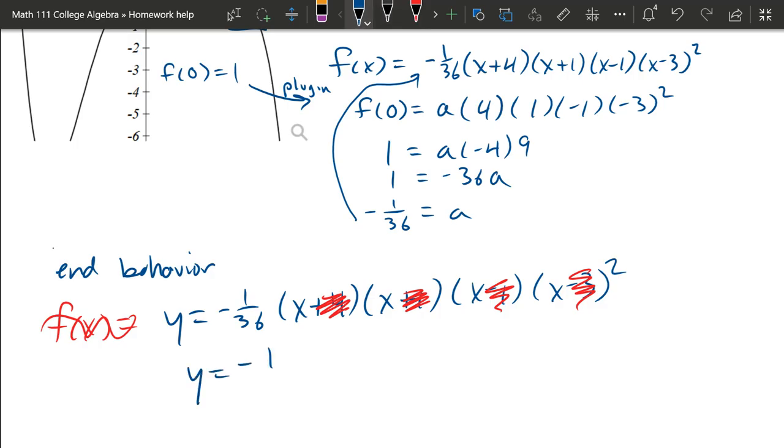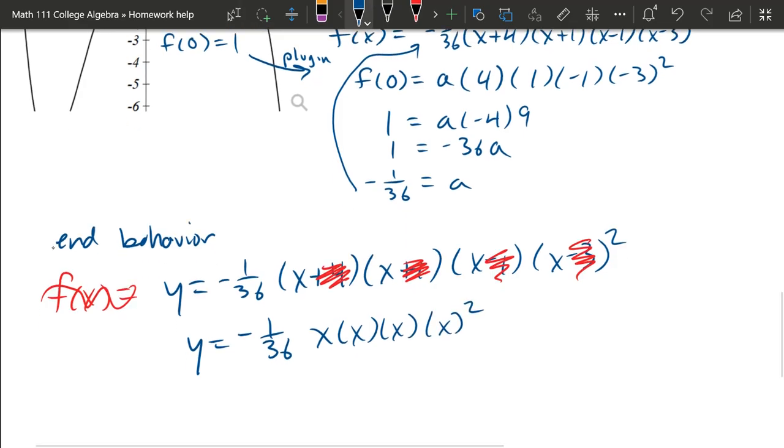So I'm going to simplify this now. It's x, x, x, and x squared. So total there's 5 x's multiplied together. Negative 1 over 36 times x to the 5th.